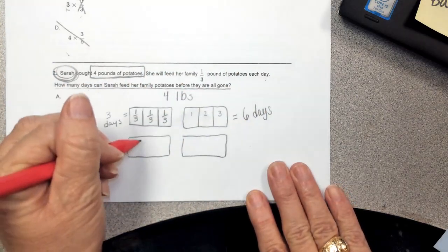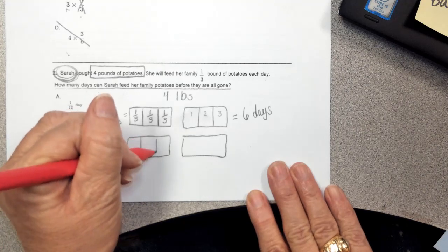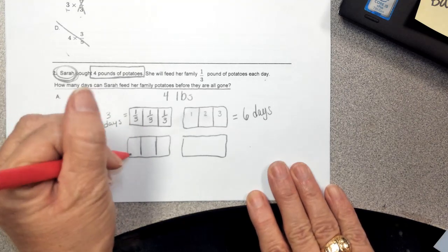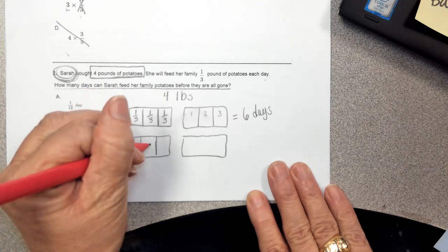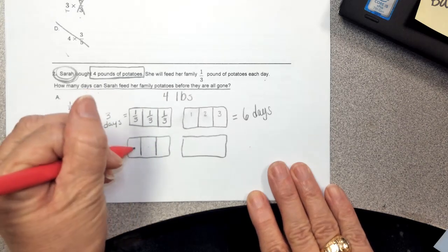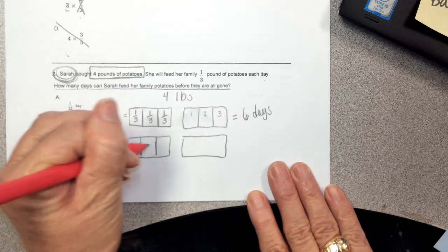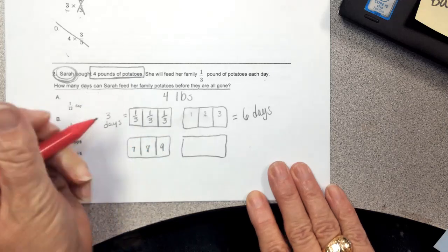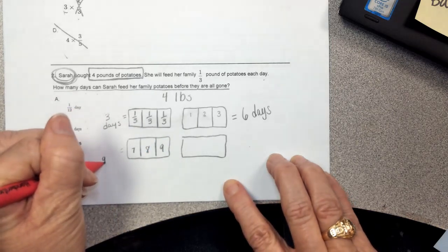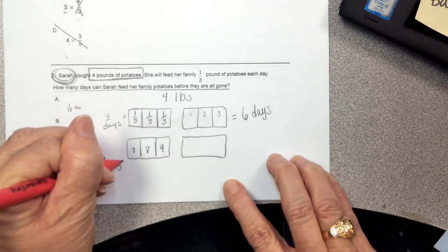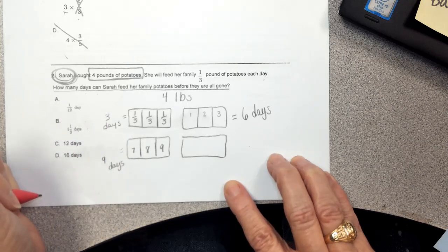I'm going to continue cutting my models, cutting this into thirds. This would be day seven, day eight, and day nine. So right now, we have nine days that we can feed our family the potatoes.